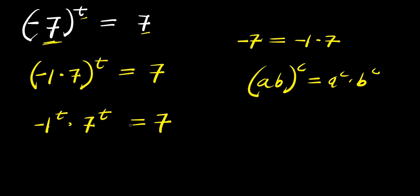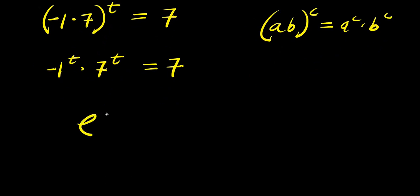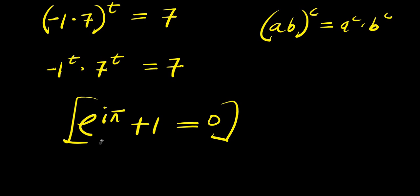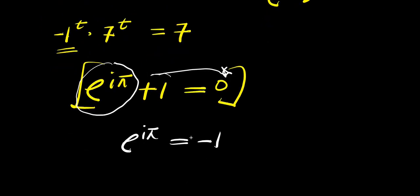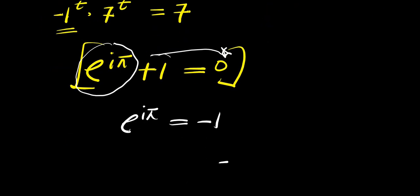Now at this point, I consider Euler's identity. If I have e to the power of i times pi plus 1, this equals 0. This is the Euler's identity that you must take into consideration. Now there's negative 1 here. I can move it over and select e to the power of i times pi. So once I do that, I'm going to have e to the power of i times pi equals negative 1.